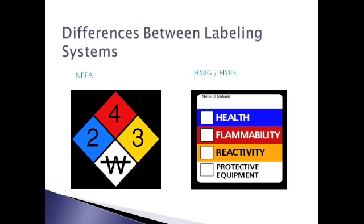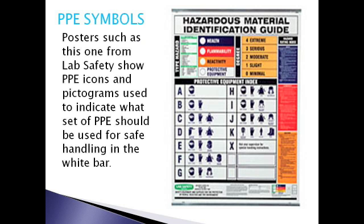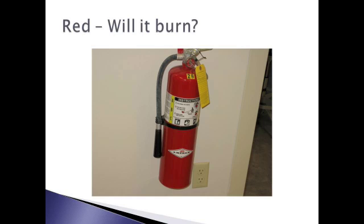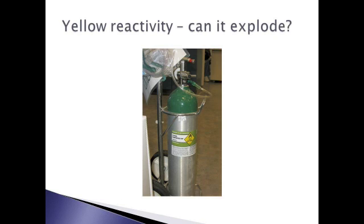Differences: they differ in layout — the NFPA uses four diamonds and HMIG uses vertically stacked bars. They differ in the interpretation of the fourth white field: special handling with the NFPA system, and protective equipment or PPE with the HMIG system. They differ in intended audience — HMIG and HMIS target employees who must handle hazardous chemicals in the workplace, while the NFPA system was designed to alert firefighters arriving on the scene of a fire to the hazards present at that location. Therefore, the NFPA assumes there is a fire present; no such assumption is made with the other systems. As a result, the numbers assigned to the categories may differ between systems, even for the exact same chemical.